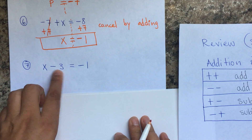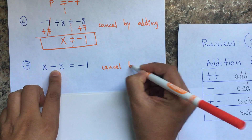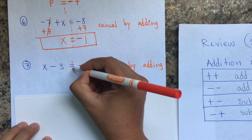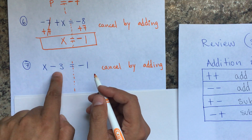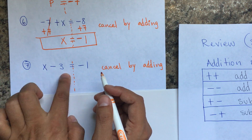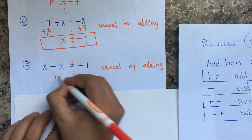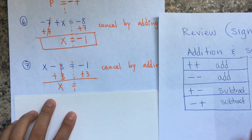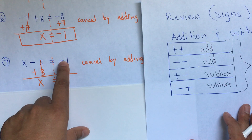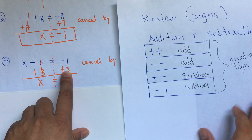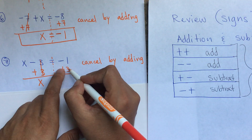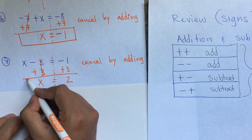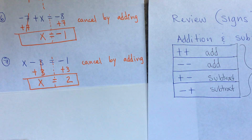Here I'm subtracting, so the opposite is cancel by adding. This is similar to the previous one but flipped. Draw your dividing line at the equal sign and cancel on both sides. If I'm subtracting three, the opposite is to add three to both sides. X equals negative one plus three — one negative and one positive means subtract and take the greatest sign. Three minus one is two, and the positive is greater, so the answer is just positive two.